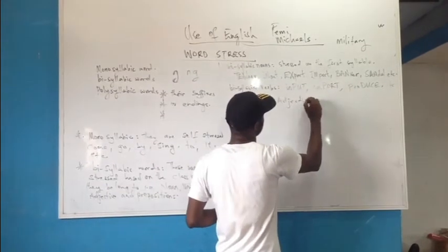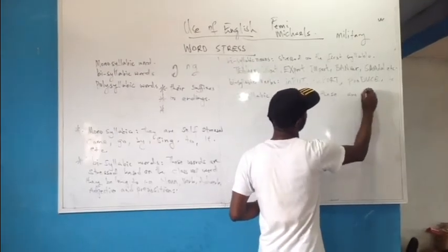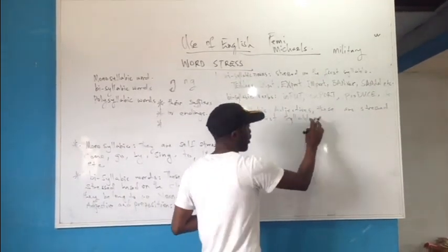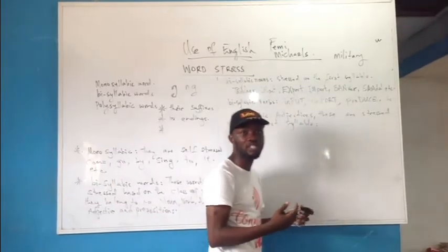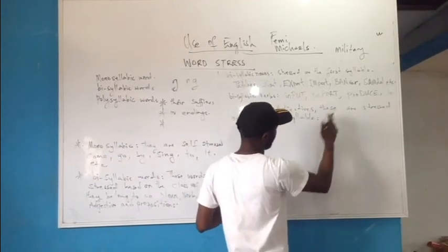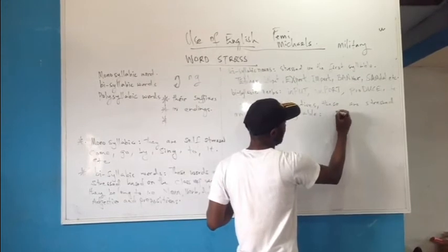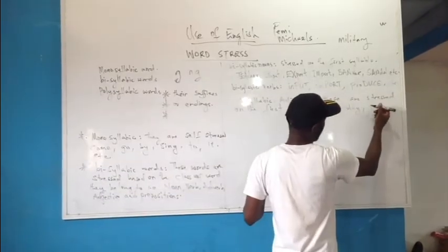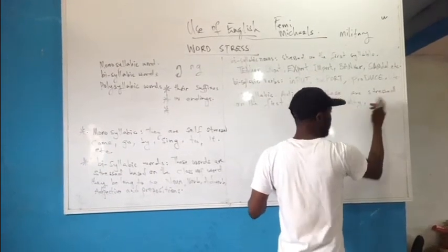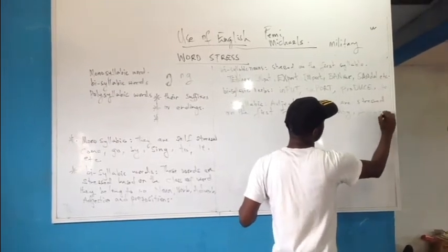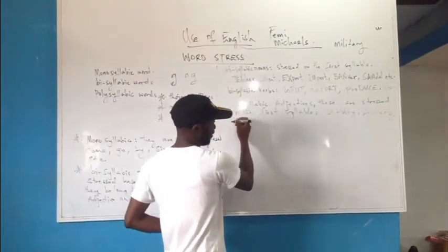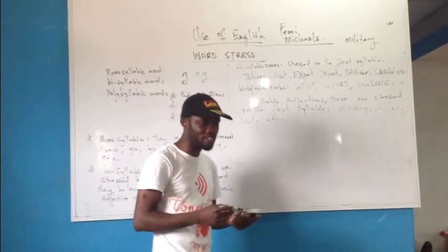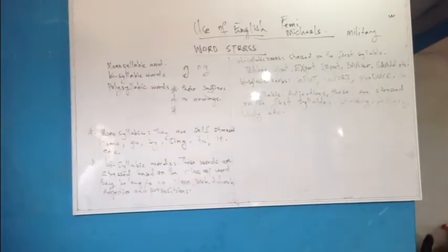Bisyllabic adjectives are stressed on the first syllable. Remember, adjectives are words that give quality or talk about the value of something. For instance, 'beauty' — BEA-uty — you stress 'BEA.' Then 'angry' — AN-gry — stressed on 'AN.' Also 'ugly' — UG-ly — stressed on 'UG,' and so on. Once you see that a word is an adjective with two syllables, you stress it on the first syllable.